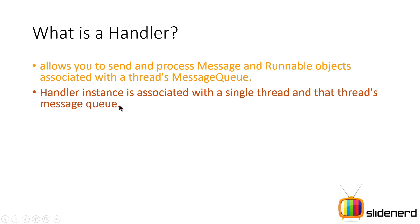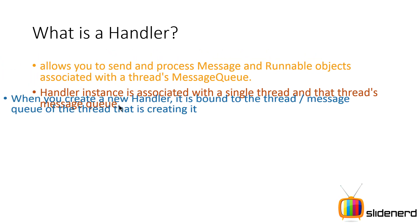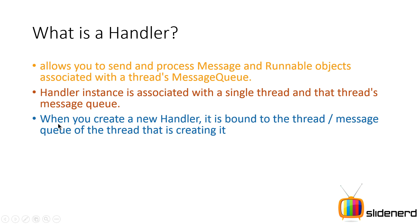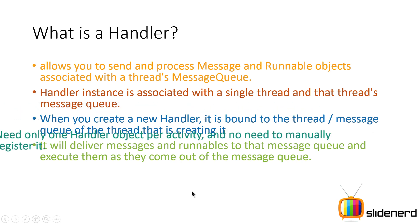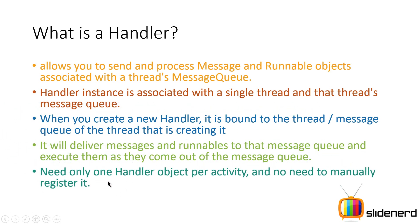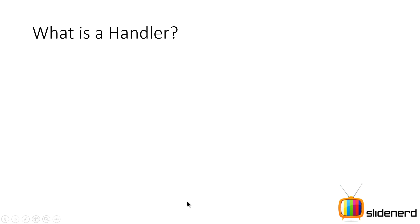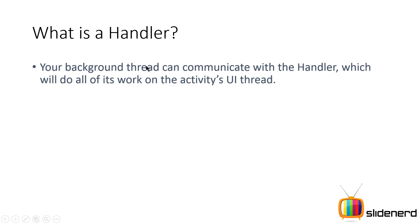You can have a Handler for any thread, not just the main thread, but here we're talking about the Handler tied to the main thread. When you create a new Handler, it is automatically bound to the thread and message queue of that thread without you needing to create any direct association. It will deliver messages and runnables to that queue and execute them. You only have one Handler object per activity or per thread, and you don't have to manually register it.